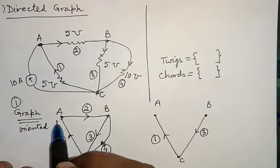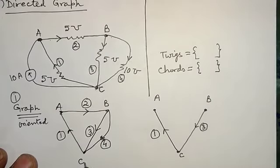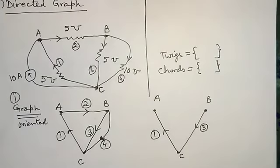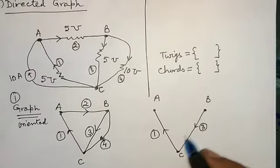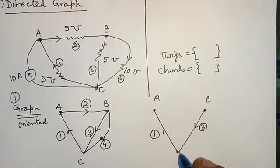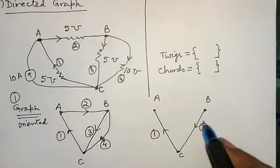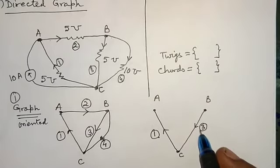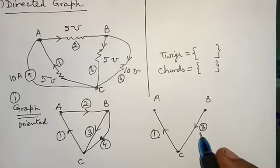Since this directed graph has three nodes A, B, and C, the tree must also have all the nodes A, B, and C. For nodes A, B, and C, this will be the tree. We can select another tree also, but I have selected the tree which is consisting of branches 1 and 3. There may be several number of trees, but I have considered this.